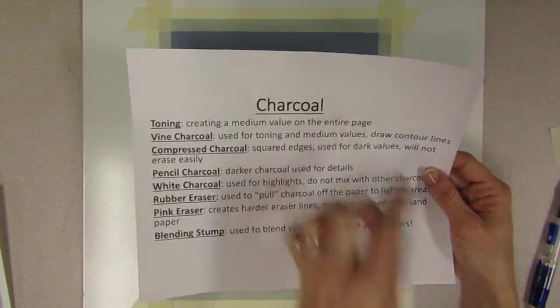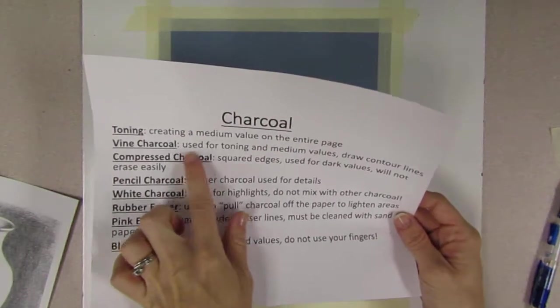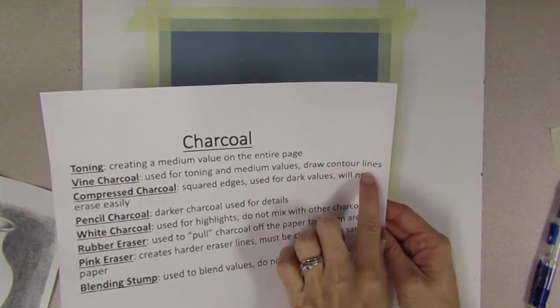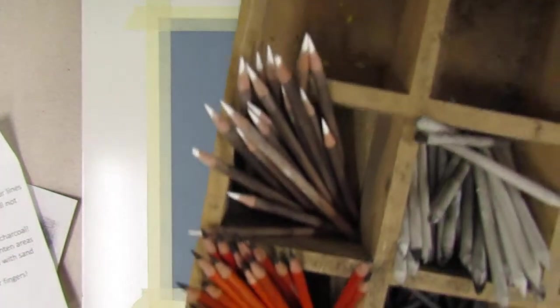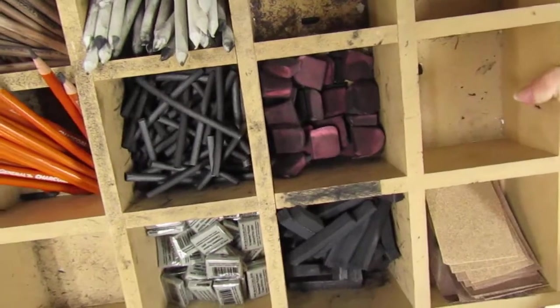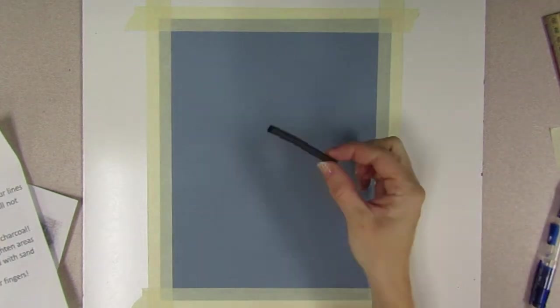Alright, so once we have this tape on here, we're ready for the next step, which is toning. And we're creating a medium value on the entire page. When we tone, we use the vine charcoal. Vine charcoal used for toning in medium values and for drawing our contour lines. So the vine charcoal, when you're going over to the supplies, it's labeled, but the supplies are in a container that looks like this. Hopefully you guys can see this on the video. The vine charcoal looks like a vine.